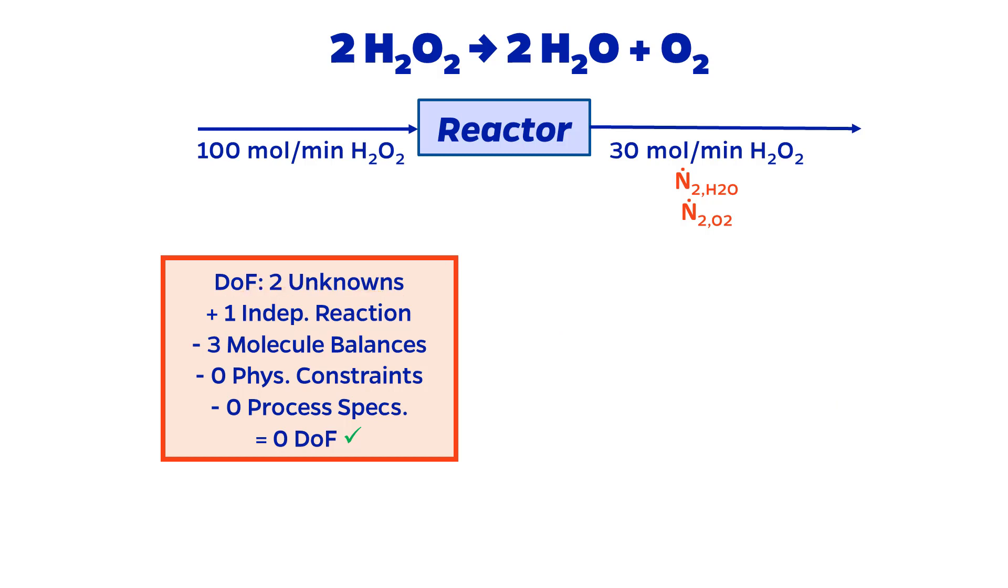The number of material balances that we can write is the number of molecular species. Here we have hydrogen peroxide, water, and oxygen, which is 3.